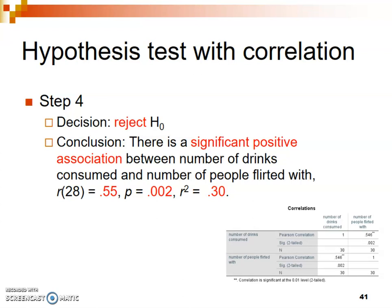We say significant positive because the R value is a positive number, indicating a positive correlation and positive association between the number of drinks consumed and the number of people flirted with. After that, we report the statistics used to make the decision. The Pearson correlation uses the R statistic, and in parentheses next to it you can put either the degrees of freedom or n equals and report the sample size.